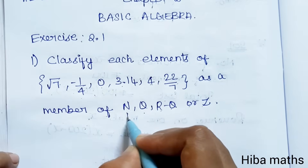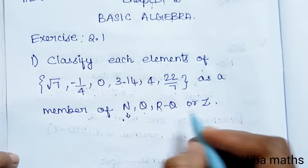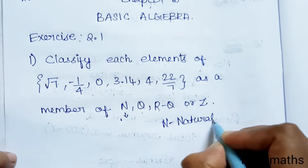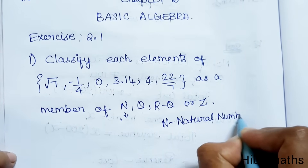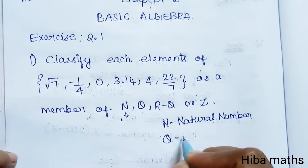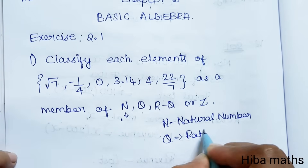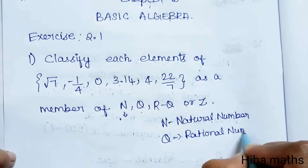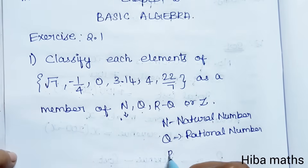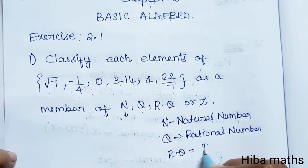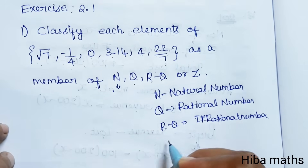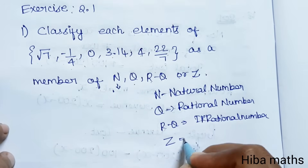N is a natural number. Q is a rational number. R minus Q is irrational number. Z is integers.